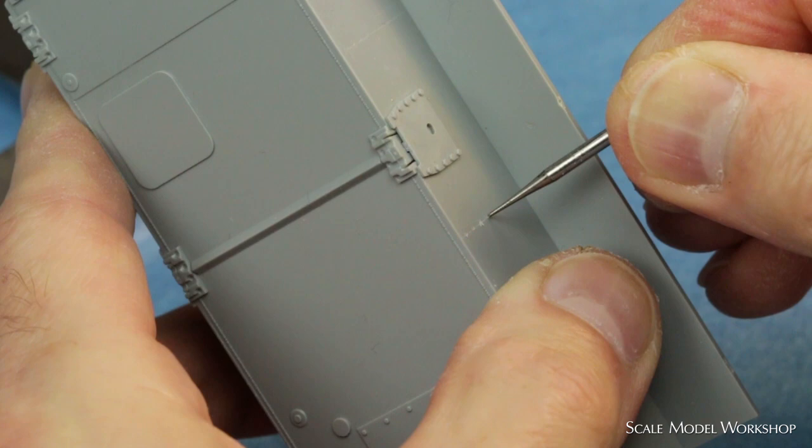I like to spot the location of the rivets with a center drill because it's more precise than a punch and it doesn't distort the surrounding plastic.